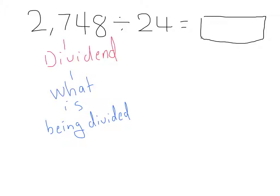And 24, the divisor, is the size of each group. And now, the quotient, the answer of this whole equation, is the number of each group.